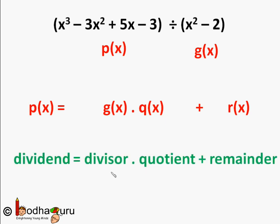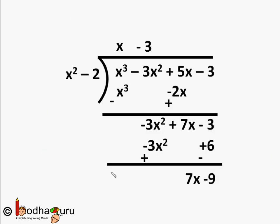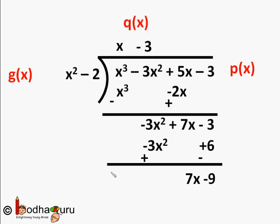That is, dividend equals divisor times quotient plus remainder. Let's verify it in our example. x cubed minus 3x squared plus 5x minus 3 was the dividend p(x). x squared minus 2 was the divisor g(x). x minus 3 was the quotient q(x), and 7x minus 9 was the remainder r(x).